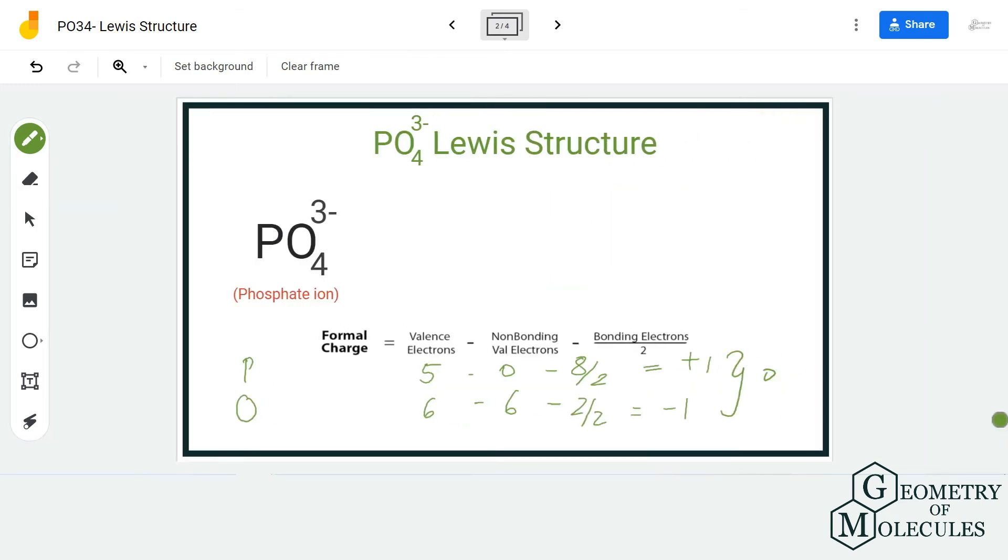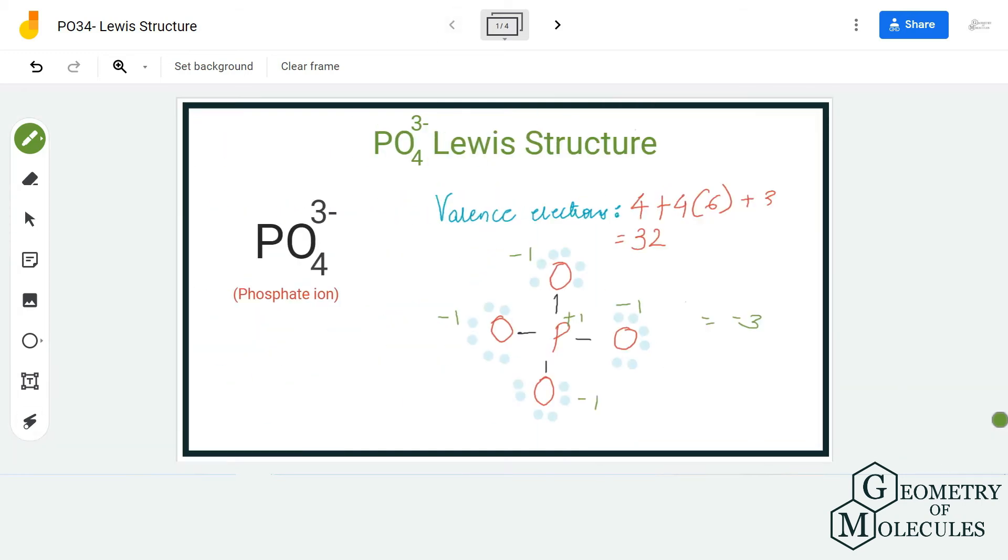Here we are going to try that this phosphorus atom has a zero formal charge. For doing that, we need to shift a pair of electrons from this oxygen atom in between this phosphorus and oxygen atom. Doing that, we might have a zero formal charge on phosphorus and it could help us to attain a good Lewis structure.